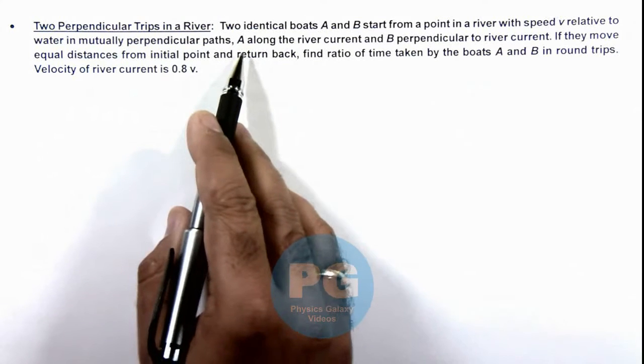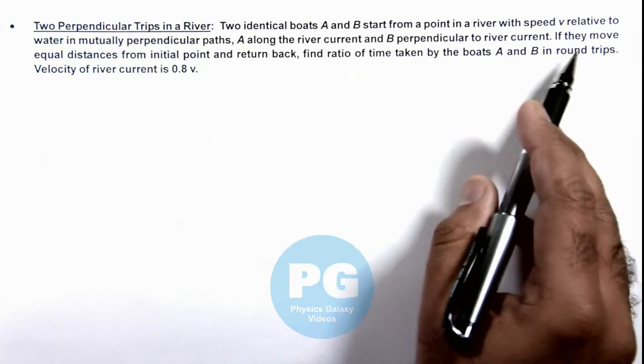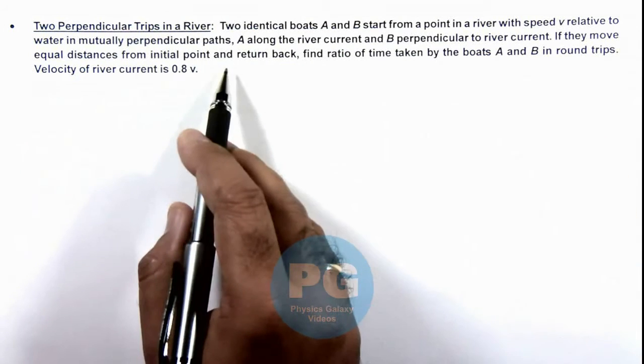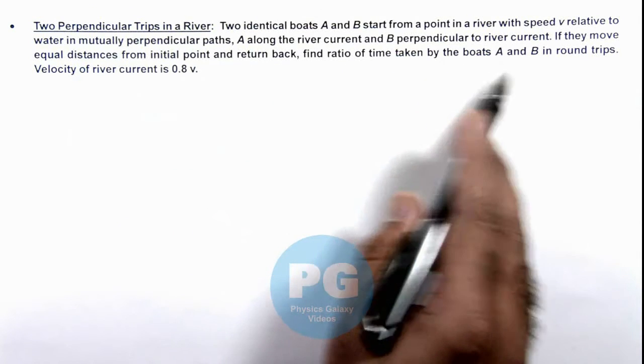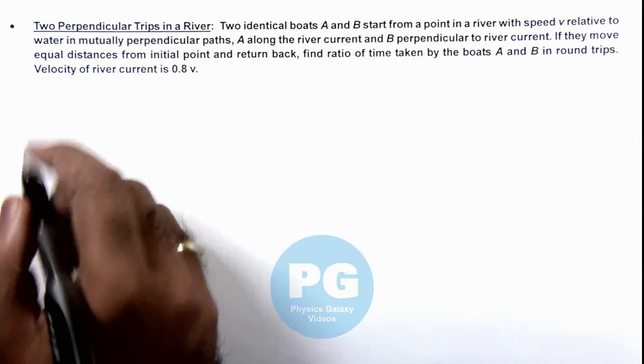Boat A along the river current and boat B perpendicular to river current. Here we are given that if they move equal distances from initial point and return back, we are required to find the ratio of time taken by the boats A and B in round trips. And the velocity of river current is given as 0.8v.